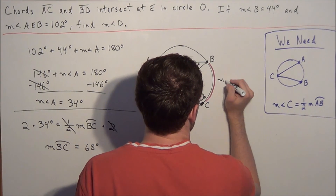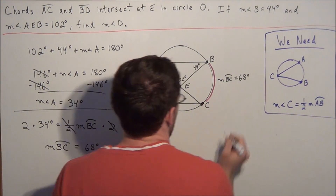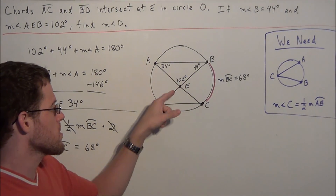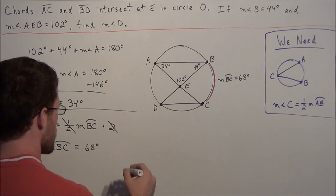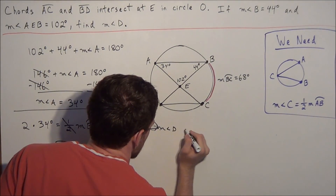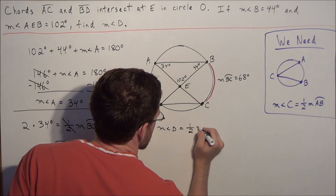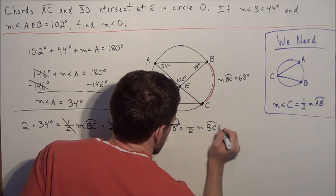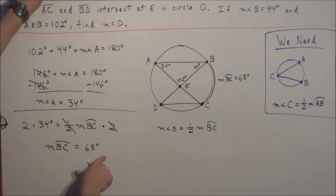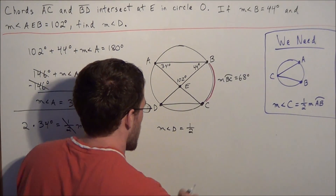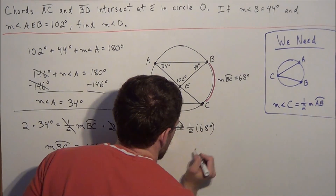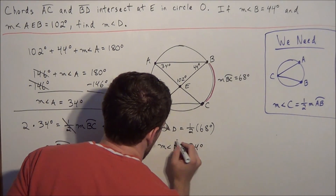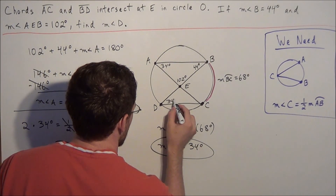The measure of arc BC is 68 degrees. To find the measure of angle D, we know that the measure of angle D equals one half the measure of the arc intercepted by angle D, which is arc BC. Since arc BC is 68 degrees, we substitute: the measure of angle D equals one half of 68 degrees, which equals 34 degrees. We label this angle 34 degrees.